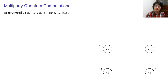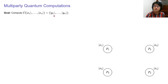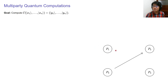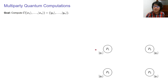Let's start with multi-party quantum computations. We have n parties, and the goal is for them to jointly compute a quantum circuit. This circuit takes an input from everybody and also has an output for everyone. At the beginning, every party hosts their private input, and then they run some protocol, exchanging messages that can be either quantum or classical, and at the end of the computation, every party gets their own output.